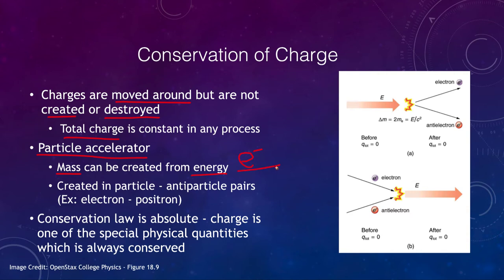As an example, we can take a particle accelerator where large amounts of energy can create mass. However, they are not created as individual particles — you cannot just create a single electron, because the charge would not be conserved. Mass and energy are really just different forms of the same thing, so in order to create particles, we have to create particle and anti-particle pairs. If we create an electron, we also have to create a positron — which is exactly the same as an electron except it has a positive charge.